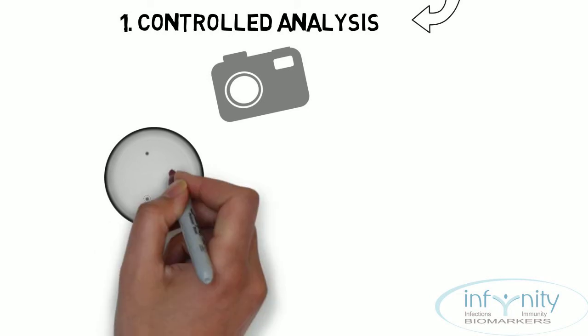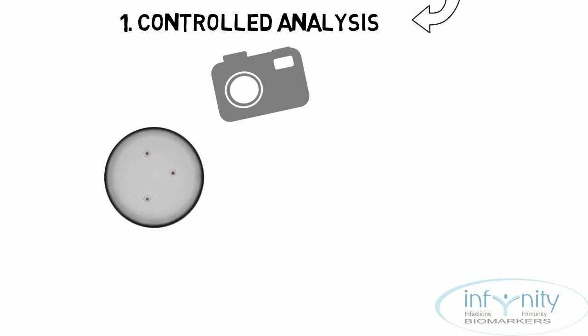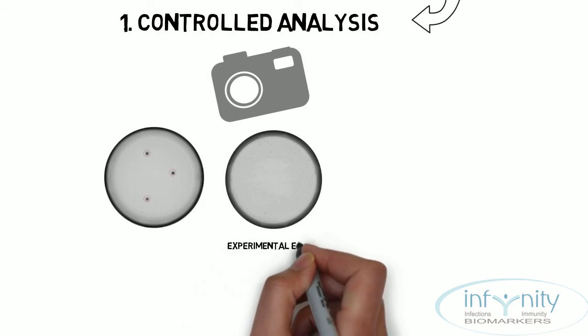Controlled analysis. In fact, the multiplex technology allows to generate one picture per test. During the experimental process, three positive control spots are embedded in each well, allowing to identify experimental errors. If you do not see the control spots, then you suspect one of the steps during the experiment has failed.